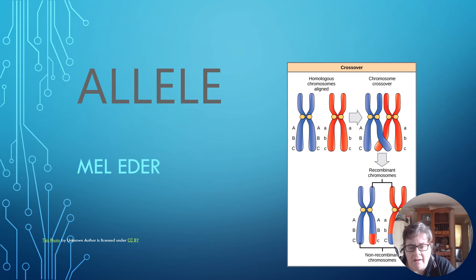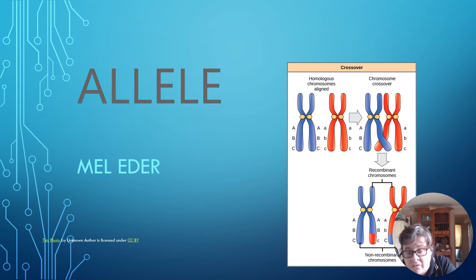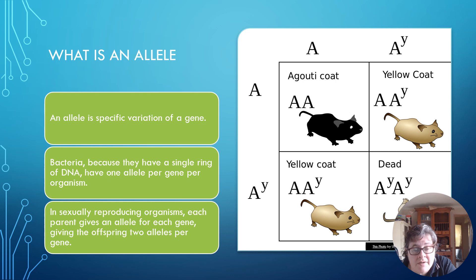This video is about alleles. Alleles are sort of like chromosomes and genes — you can have different alleles. You can have homozygous chromosomes or heterozygous. What is an allele? It is a specific variation of a gene. Bacteria, because they have a single ring of DNA, have one allele per gene per organism. In sexually reproducing organisms, each parent gives an allele for each gene, giving offspring two alleles per gene.